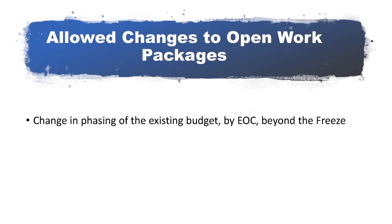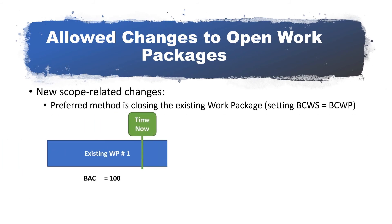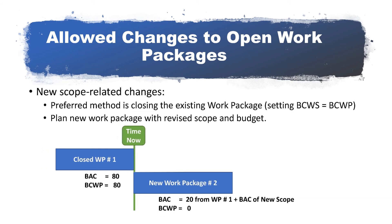Finally, a few words on the changes that are allowed to open work packages. If there is no scope adjustment or impact within the freeze period, the time phasing of the BCWS for an open work package may be changed within the overall budget and schedule parameters. This must be done by element of cost, or EOC. When new scope has been authorized which changes the current scope of an open work package, the preferred method is to close the work package by setting BCWS equal to BCWP. This method will erase any schedule variance but retain the cost variance in the closed work package. A new work package is then established comprised of the remaining scope and budget from the closed work package, plus the scope and budget of the newly authorized scope. The budget value used from the closed work package is calculated by subtracting the cumulative BCWP from the Budget at Completion, or BAC.